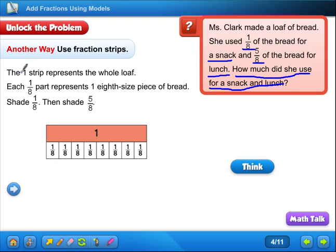One strip, right here, the one strip represents the whole loaf. That's before it was cut, but now we've cut it into eighths. Alright, so what they want us to do is they want us to shade again. So, this was the snack. And then we're going to shade for her lunch. Remember, that was the snack. Now we need to shade how many pieces for her lunch? We need to shade five. One, two, three, four, five.